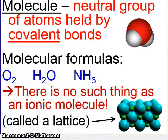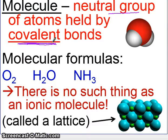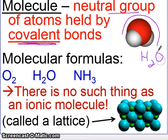Let's look at covalence first and define something called a molecule. A molecule is defined as a neutral group of atoms held by covalent bonds. Covalent bonding is what holds molecules together. In a water molecule, hydrogen and oxygen are bonded together by the sharing of electrons — they're both sharing a pair of electrons. You have individual units in a covalent bond.